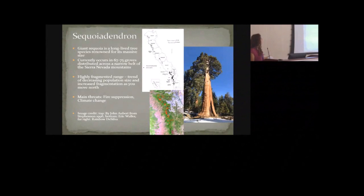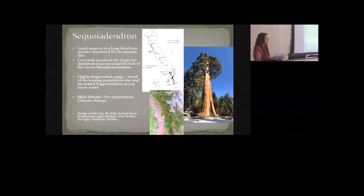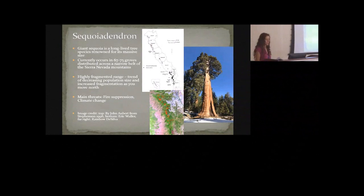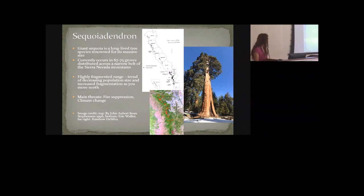Giant sequoia is another long-lived tree species — the largest tree in the world. It occurs in about 70 groves across the western slope of the Sierra Nevada, and it has a highly fragmented range, with increased fragmentation as you move north. It ranges from about the same latitude as Lake Tahoe to a little northeast of Bakersfield. The southern range has more populations but is still fragmented, with populations that tend to be distinct and separate.